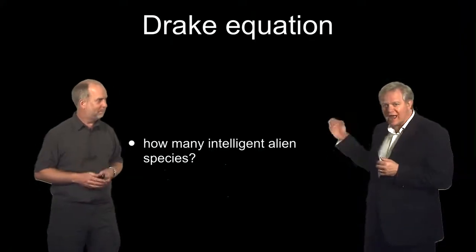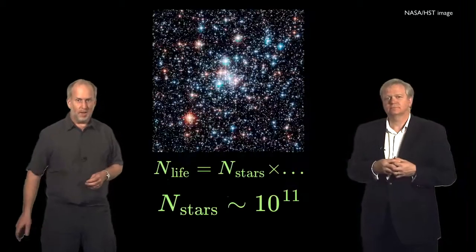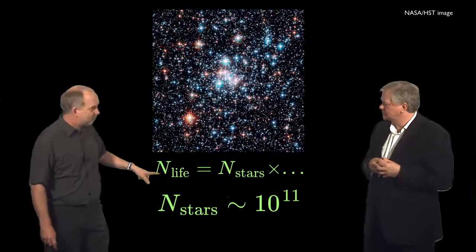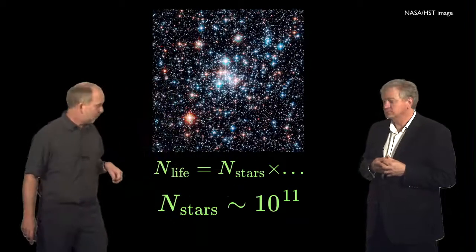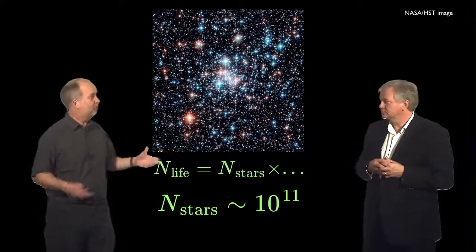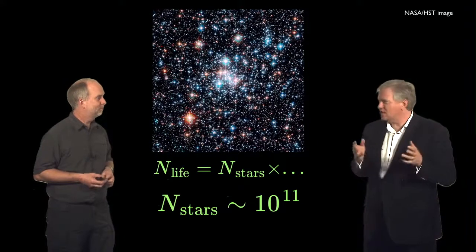So we're going to try to figure out how many intelligent alien species are out there. Okay, so we're going to have an equation with the number of intelligent life forms. It's going to be a whole bunch of different things multiplied together. So we'll start off with the number of stars. Clearly if there are more stars, there's going to be more life forms out there. And boy, there's a lot of stars out there.